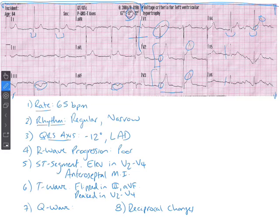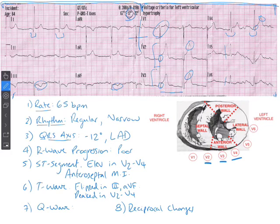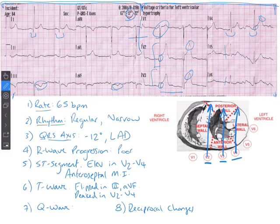We'll bring up a quick photo showing what the V leads are actually looking at in a cross-section of the heart. To see reciprocal changes for our leads in question — V2, V3, and V4 — we'd be looking 180 degrees across the heart. Nothing really lines up. We could do posterior lead placement to check for posterior ST depression, but we don't have those in place, so for our purposes we're going to say there are no reciprocal changes.